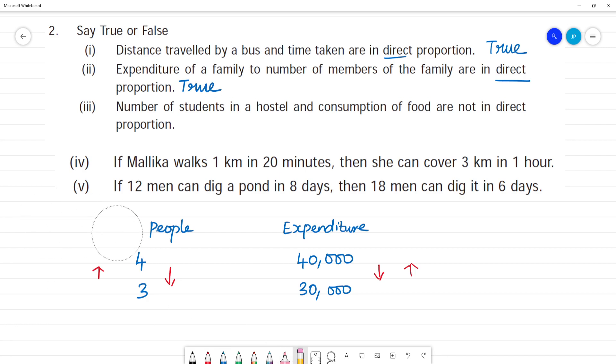Third one is number of students in the hostel and consumption of food. Now, number of students - number of students is less, food consumption is less. Number of students is less, food is less.